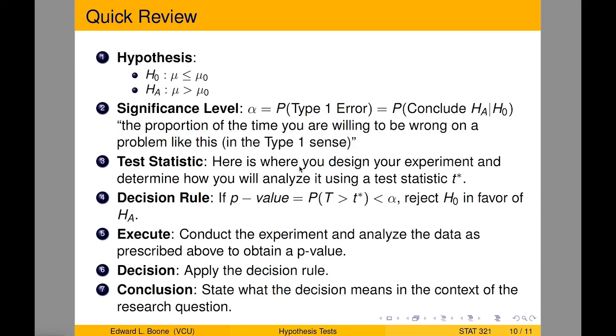I usually think of this as the proportion of the time you're willing to be wrong on a problem like this. And I put it in the type one sense. So, how important is the question? That's what the significance level is. If it's really important, then you should have a really small number, because I don't want to be wrong very often. So, keep that in mind.